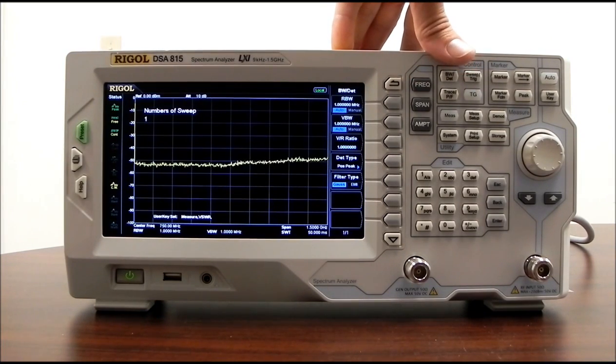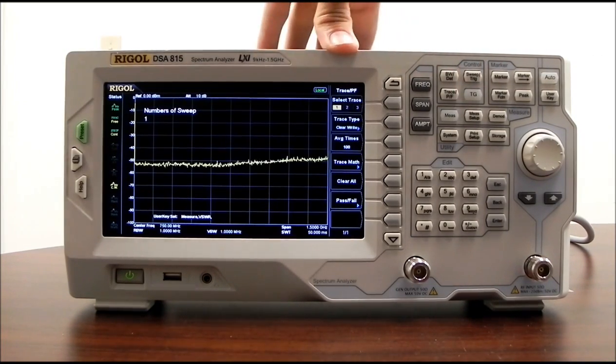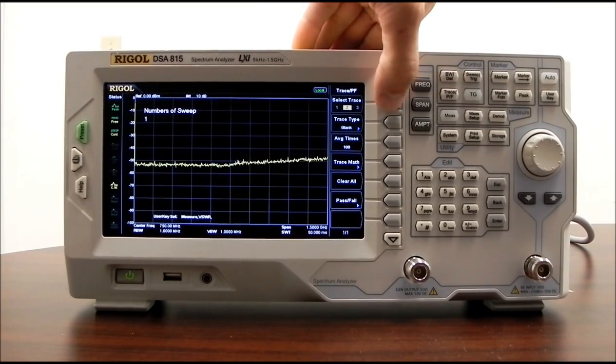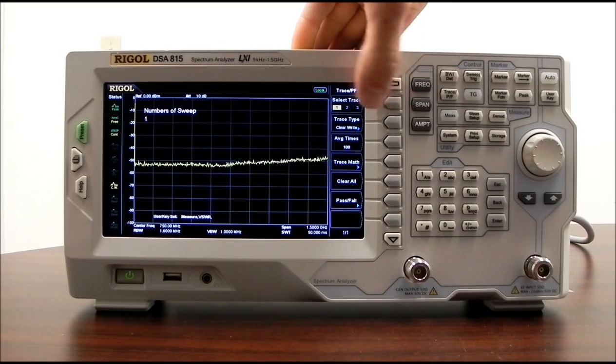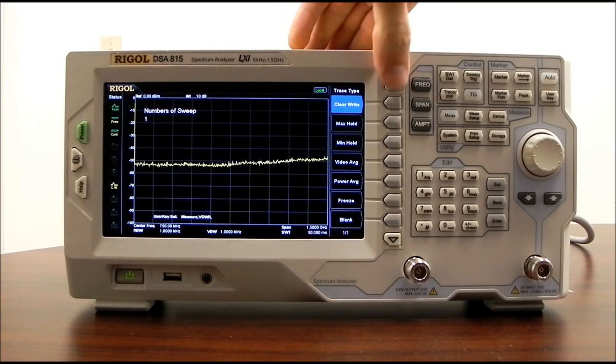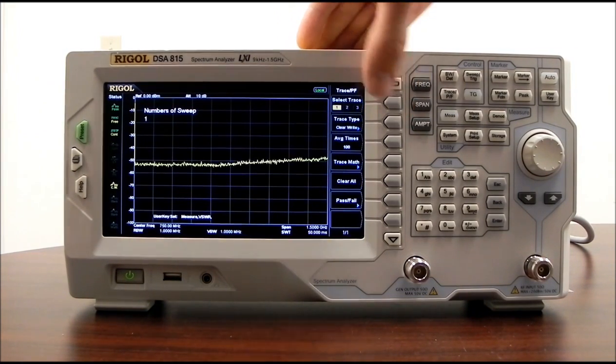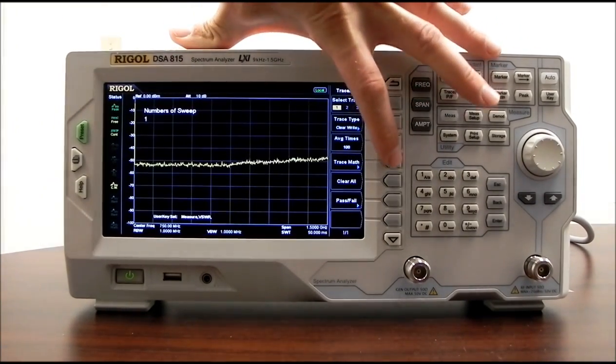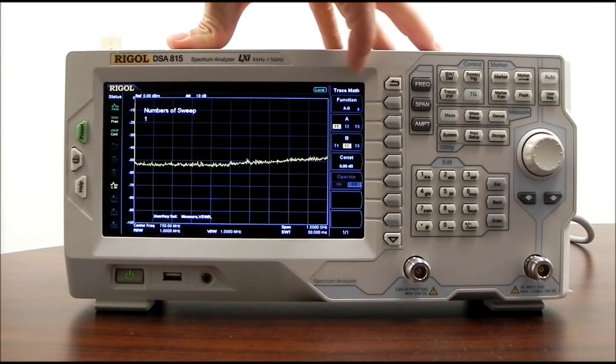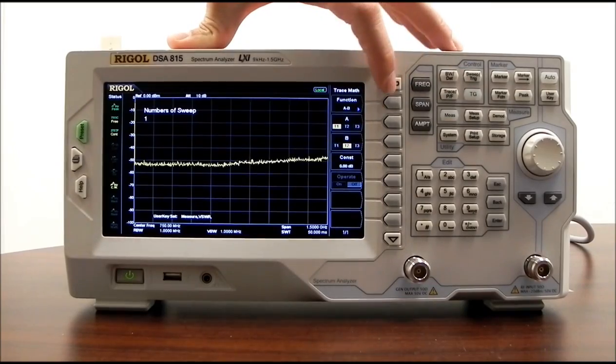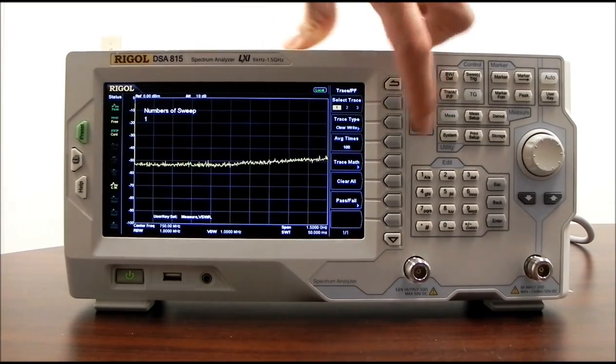Then let's move on to our trace. We have three traces that are selectable. In this case, we're doing trace one. You can select trace two or trace three. And then we have trace type. So we can do max hold, min hold, video average, power average, freeze. And then you can also have a blank screen. We have a number of averages per trace as user selectable. We can also do trace mathematics. If you wanted to add one trace to another trace or perform basic math on those, you can do that. And multiply by constants. We have clear all, which is going to clear the screen.